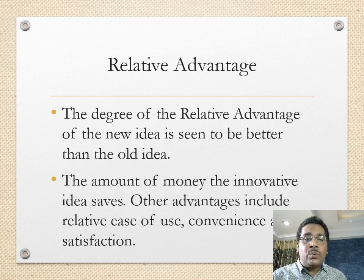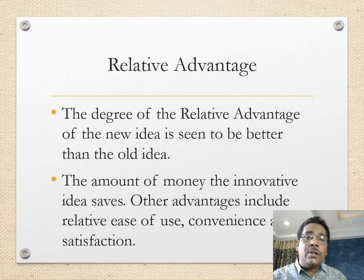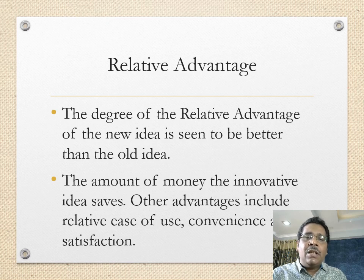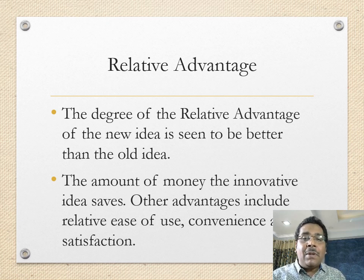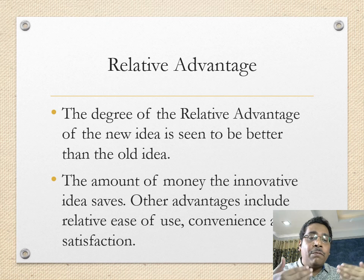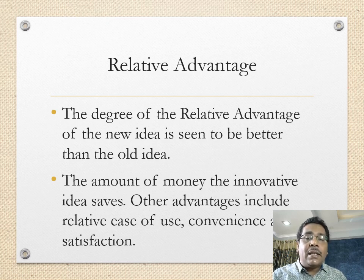Everett Rogers describes five factors that determine whether a new idea will be adopted. The first is relative advantage — how much better the new innovation is compared to the old idea. If it's only incrementally better, people may not be interested, but if it's substantially better they will consider adopting. Relative advantage includes affordability, convenience, social status, and whether it's part of a social trend — all determining whether the new technology will be adopted.